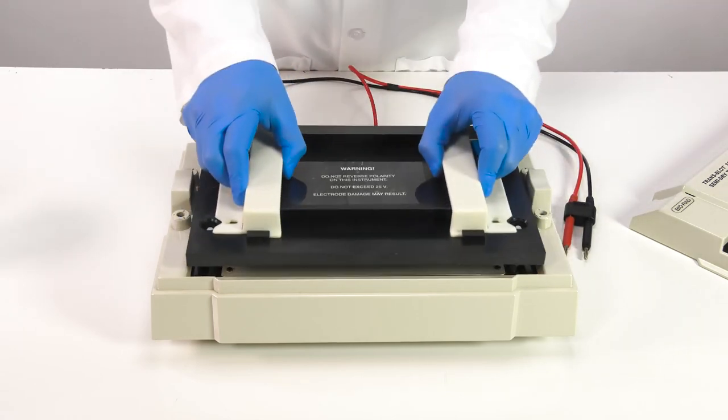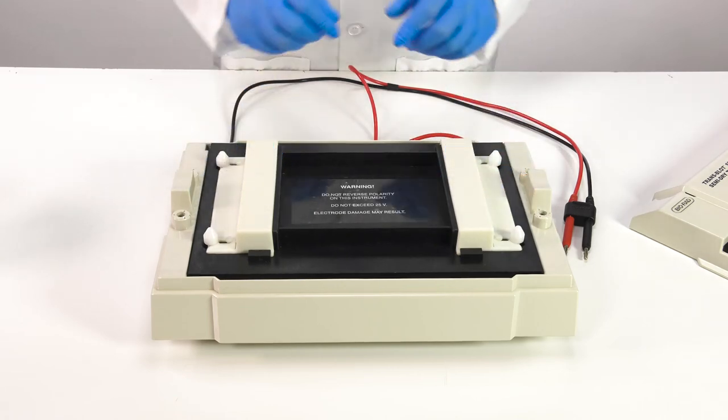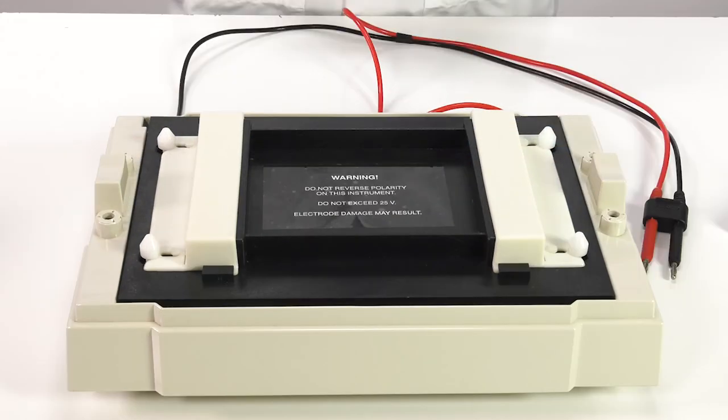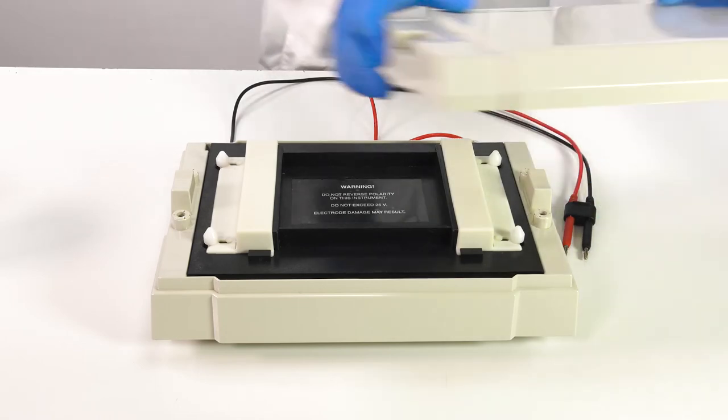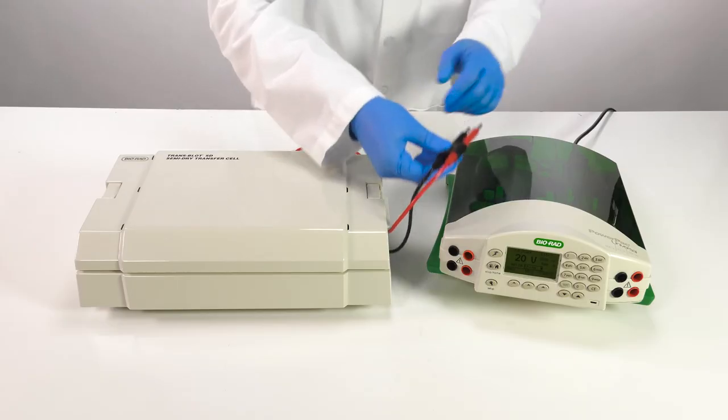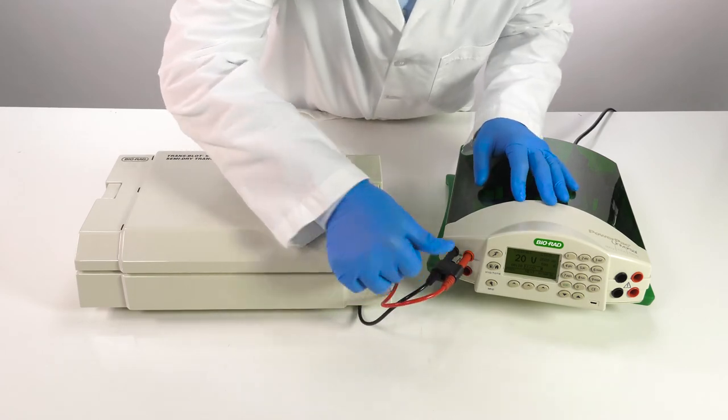Carefully place the cathode onto the stack. Press down to engage the latches with the guideposts without disturbing the transfer stack. Place the safety cover on the unit. Plug into the power supply and begin your transfer.